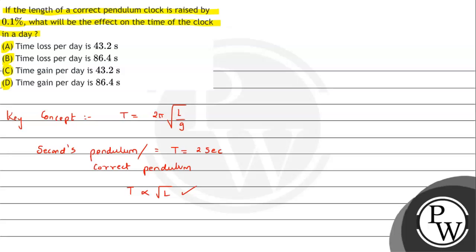We have been given that it has been increased by 0.1 percent. So 0.1 percent means one upon thousand. From this we can write T2/T1 will be equals to √(L2/L1), which equals √(1 + 1/1000) raised to one by two.